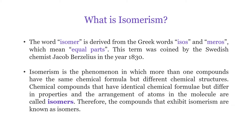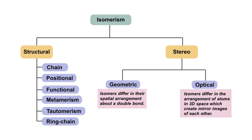Let us see the classification tree of isomerism. Isomerism can be divided into two major types: structural isomerism and stereoisomerism. Structural isomerism — the name itself indicates that the structure is going to be different but the molecular formula is going to be the same. Structural isomerism can again be divided into six types: chain isomerism, positional isomerism, functional isomerism, metamerism, tautomerism, and ring chain isomerism.